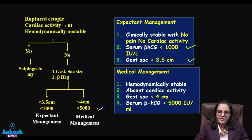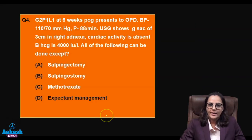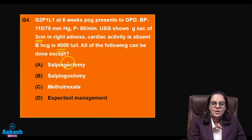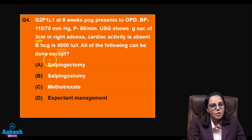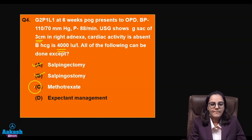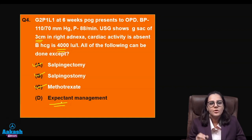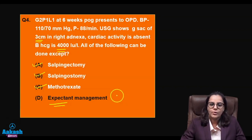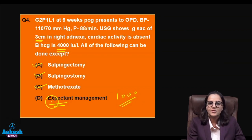Medical management can be done when beta-hCG is up to 5000 and sac size is less than 4 cm. In this question, the sac size is 3 cm but beta-hCG is 4000. Can we do salpingectomy? Yes — surgical option is always available. Methotrexate? Yes — she is an ideal candidate for medical management. Expectant management? No — although sac size is less than 3.5 cm, the beta-hCG of 4000 exceeds the limit of 1000.